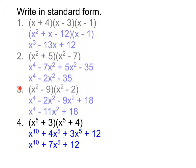Is the same thing true in number three? Negative 9 and negative 2 — do they add to the middle number and multiply to the last number? Yes. So when both sets of parentheses start with x squared, that pattern holds. And in number four, where each binomial starts with x to the fifth, the numbers 3 and 4 also add to the middle and multiply to the last. The key is that both binomials start with x raised to the same power.